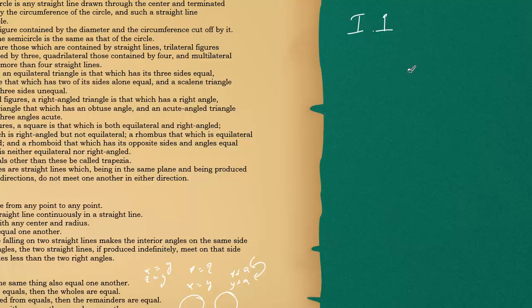You take a point and join it. How do you know what a point is? It has been defined. How do you draw a line? It has been defined, and it has been mentioned in the postulates. To draw a line, you just join two points.